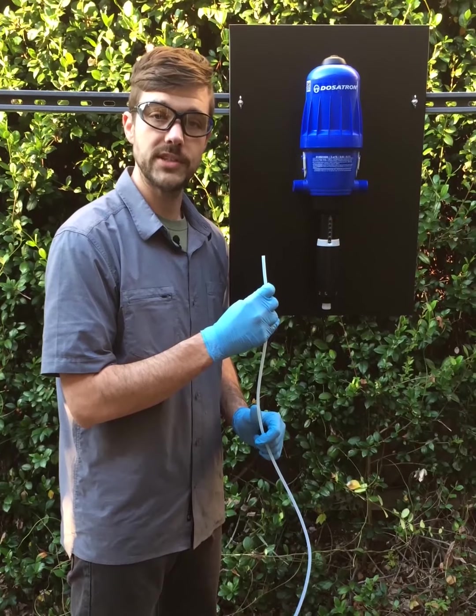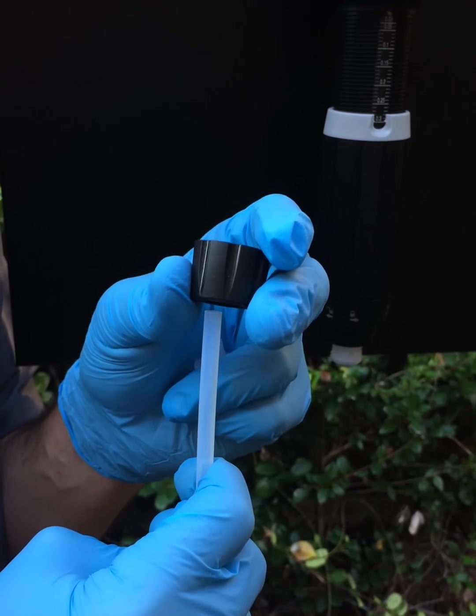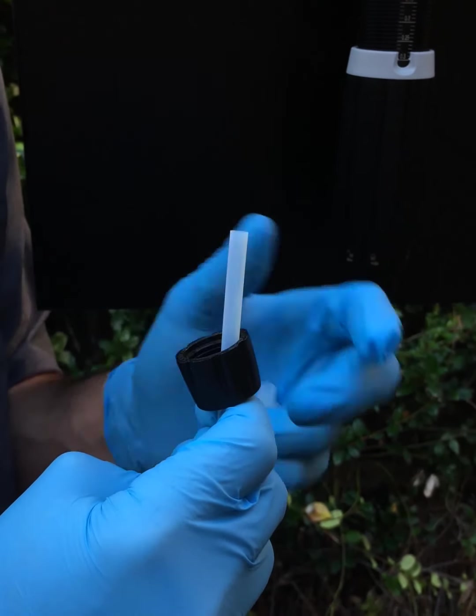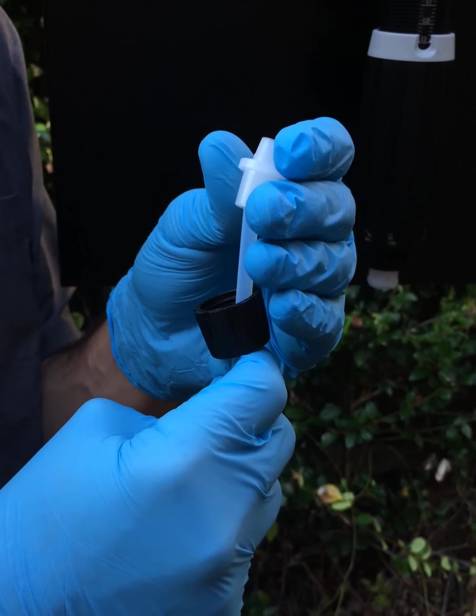Now that we've ensured there are no leaks and the check valve is working, we're going to reattach our hose assembly. Slide the nut over the end of the hose. Then slide the ferrule over the end of the hose, wide end first.